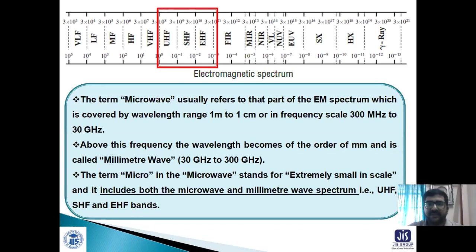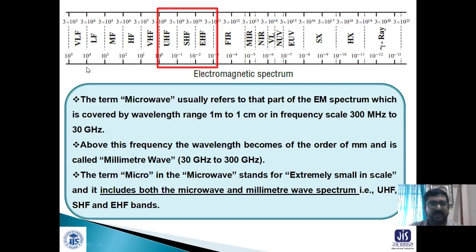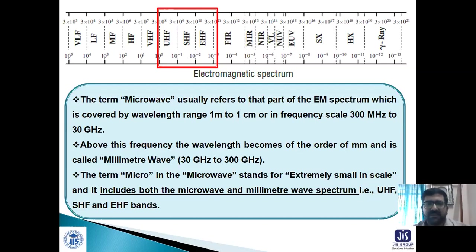One circuit can never be applicable to all kinds of electromagnetic spectrum because antenna size, device size, and transmission line size all depend on wavelength. Microwave usually refers to the part of the electromagnetic spectrum from wavelengths of one meter to one centimeter, or in frequency from 300 megahertz to 30 gigahertz. The speed of electromagnetic waves is constant in a particular medium, so in vacuum the corresponding wavelength range is one meter to one centimeter.